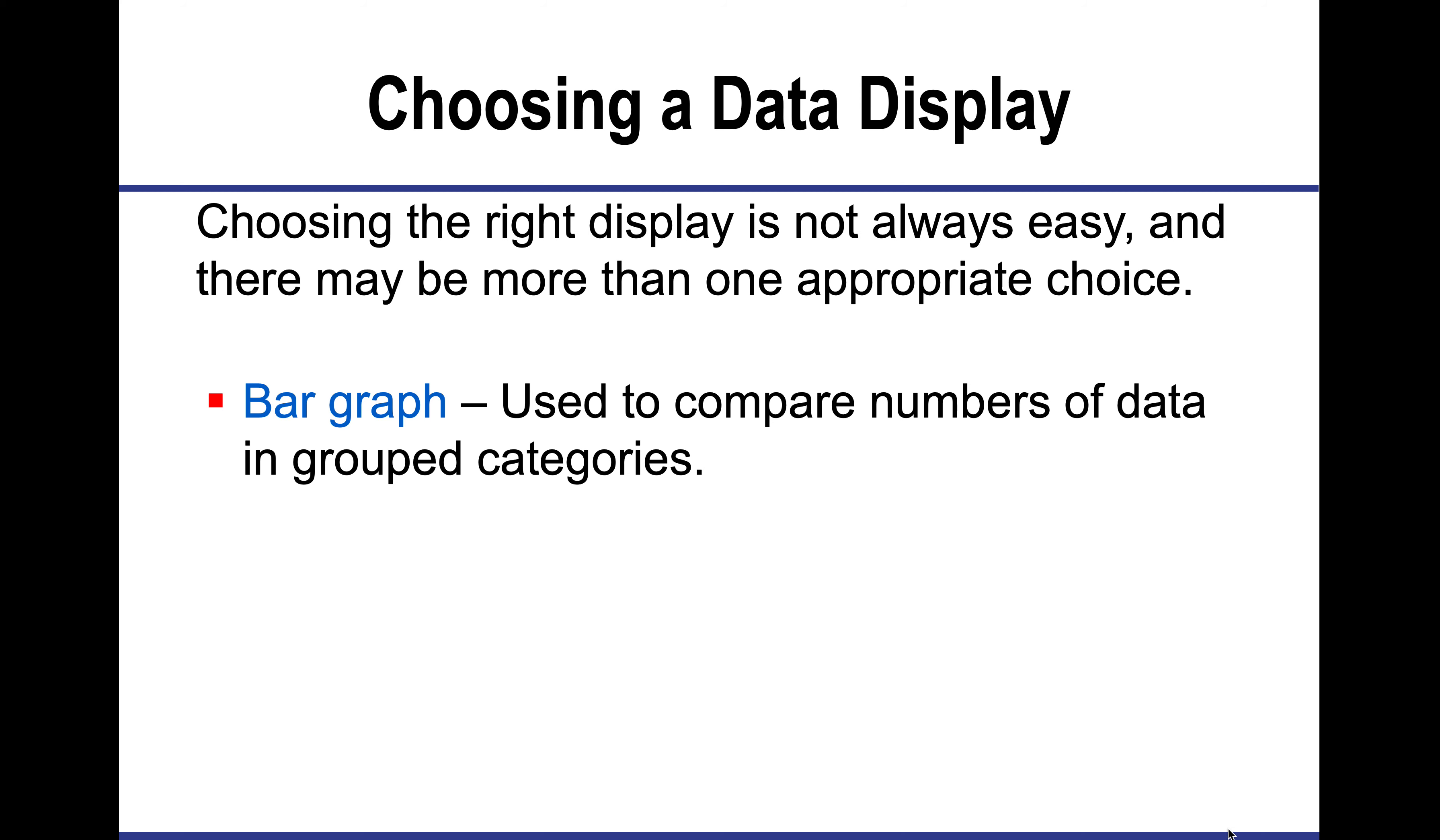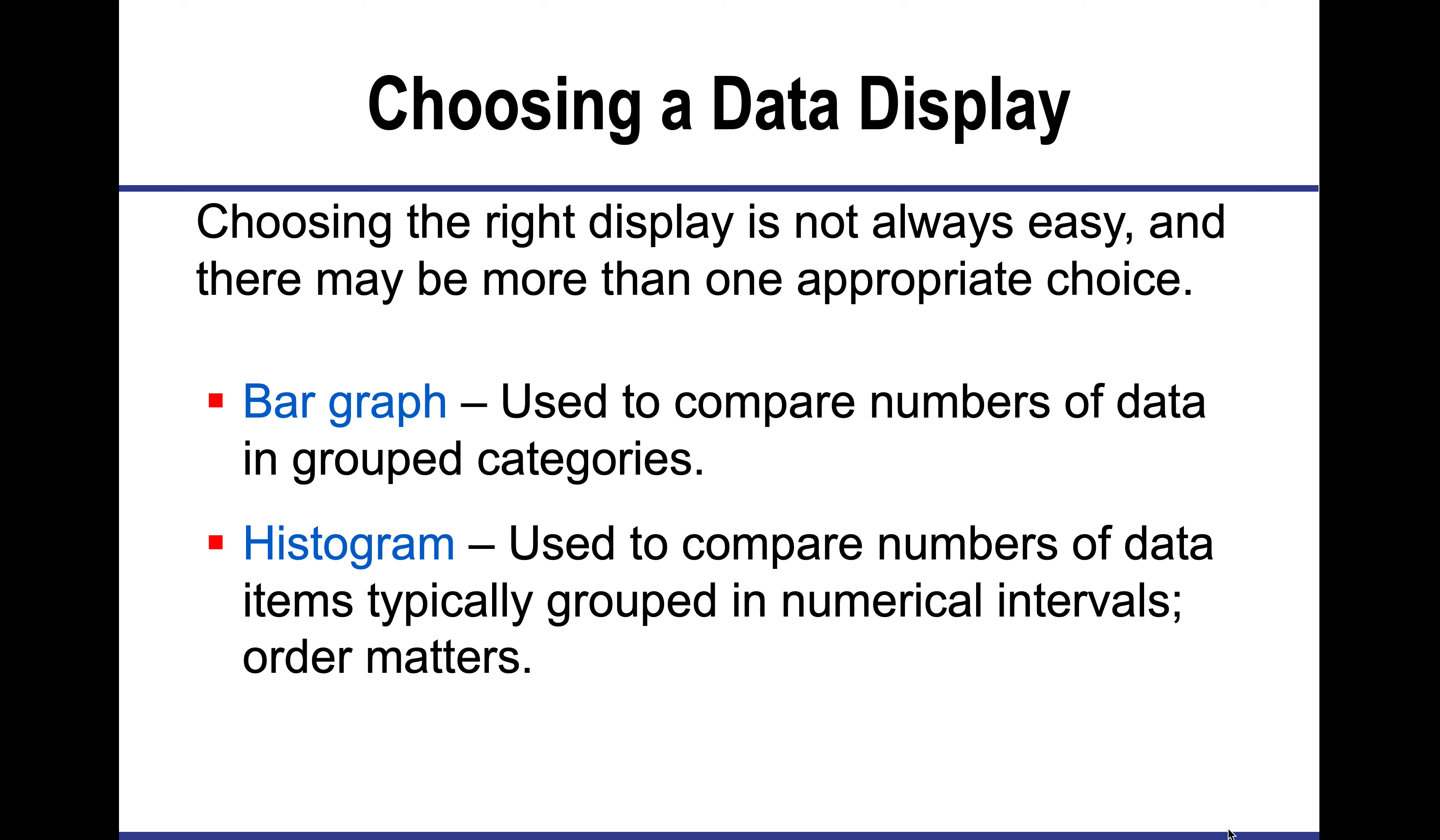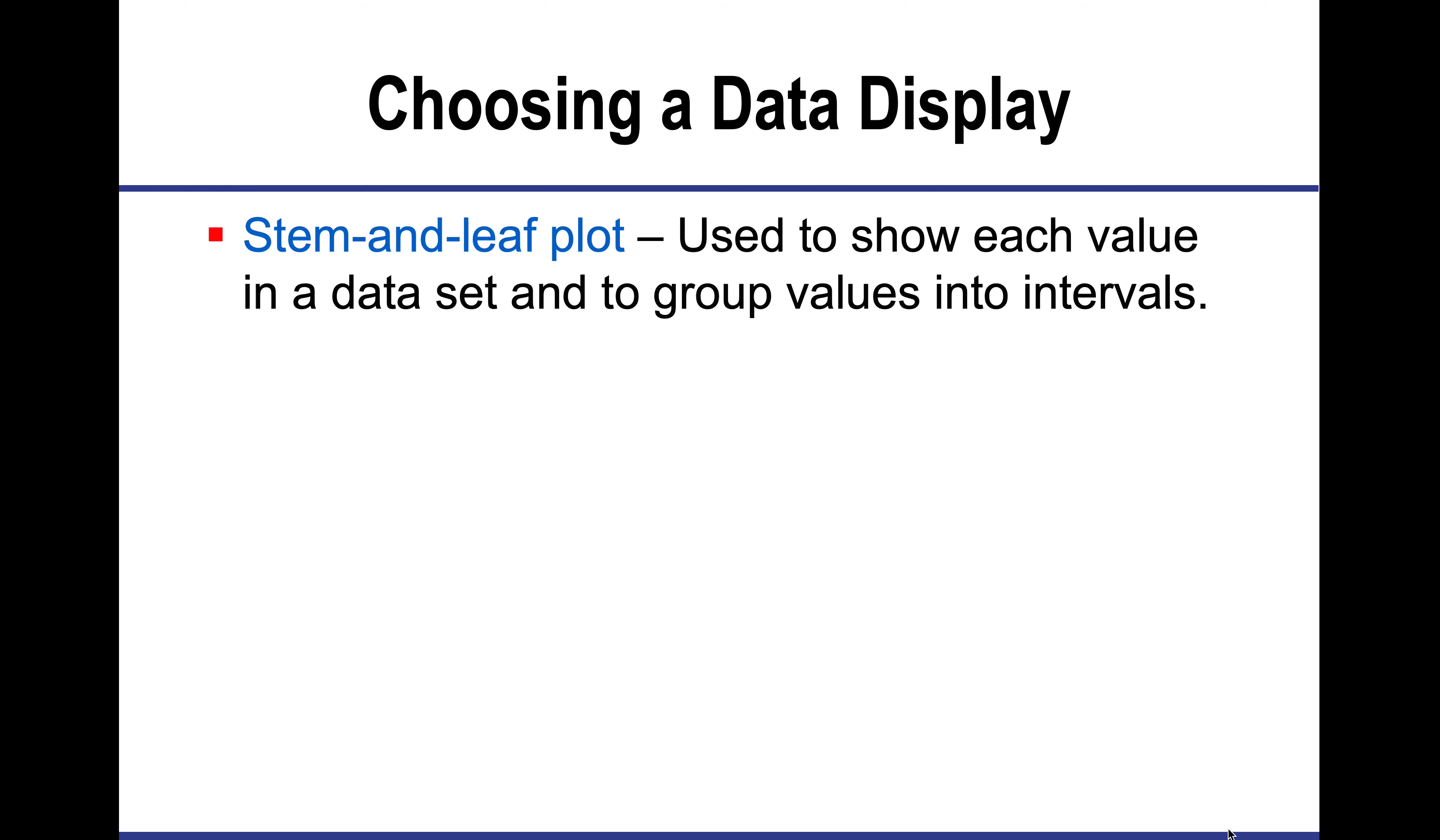A bar graph is used when I have grouped categories, not numbers. A histogram is used when data are number values with a clear order. So one thing has to come before another and it can be put into order. A stem and leaf plot is used when each value in a data set can be put into values of intervals.